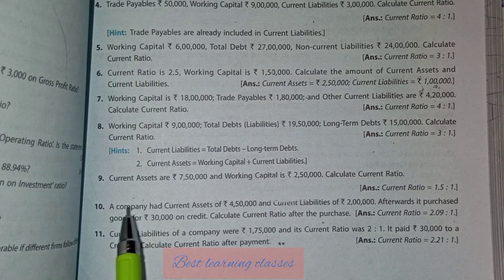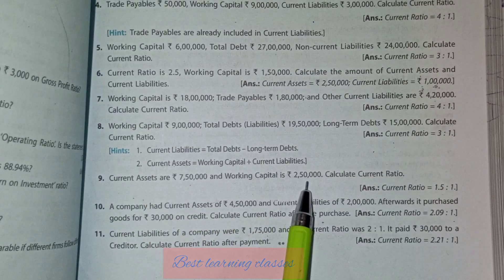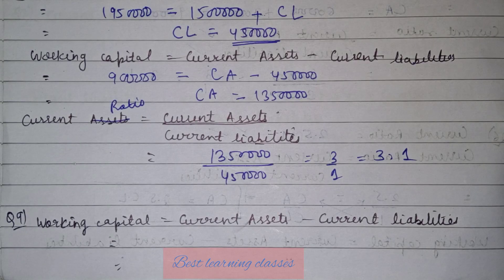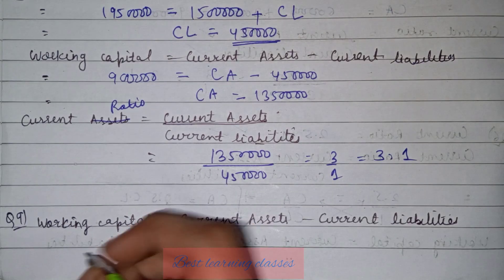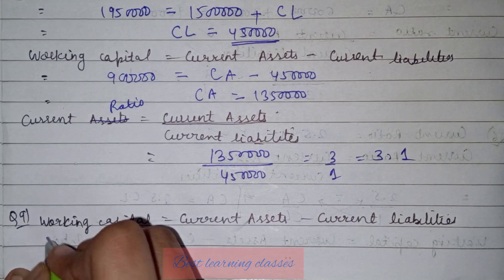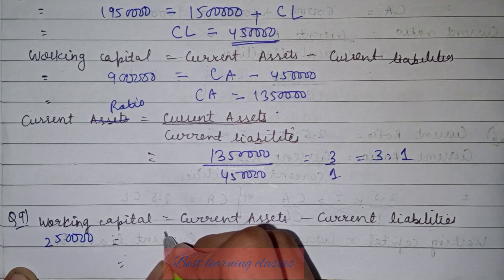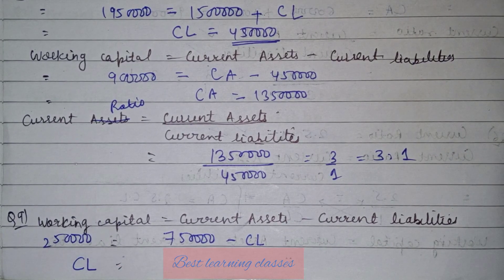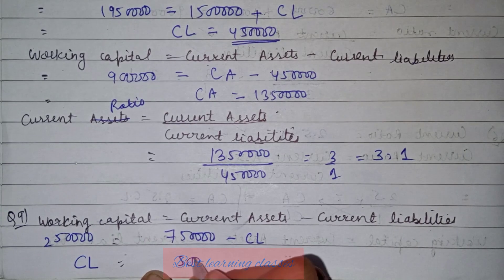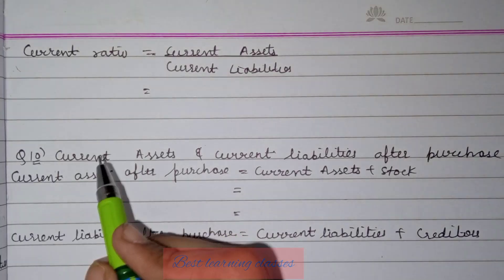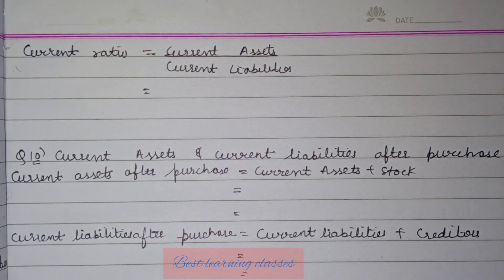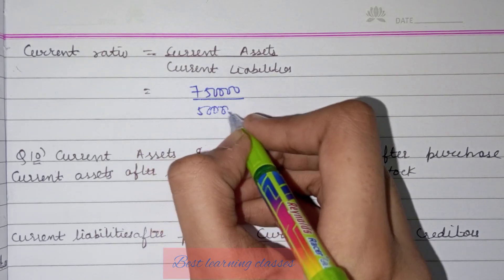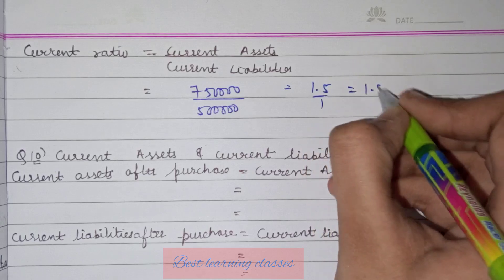Question number 9: current assets are given, working capital is given, calculate current ratio. Very easy question — one formula handles everything. Working capital = current assets minus current liabilities. Working capital = 2,50,000, current assets = 7,50,000. Current liabilities = 7,50,000 − 2,50,000 = 5,00,000. Current ratio = 7,50,000 / 5,00,000 = 1.5:1.